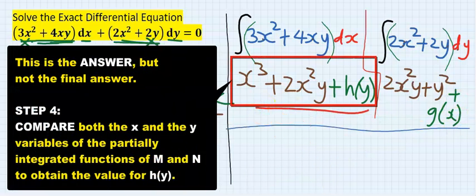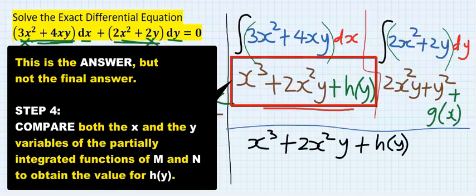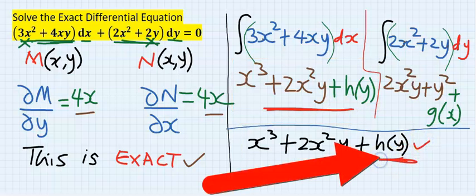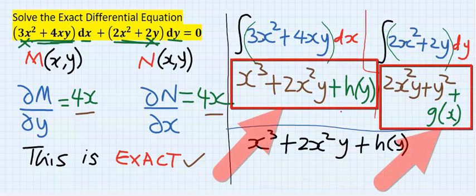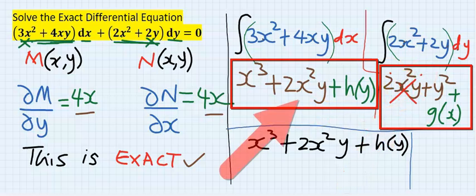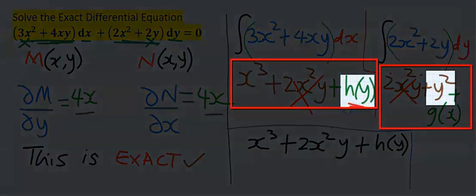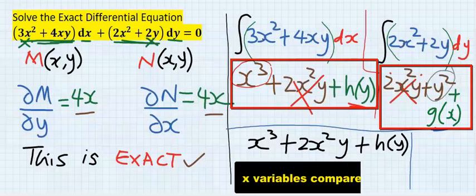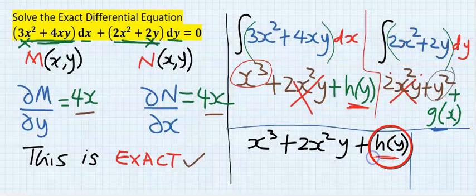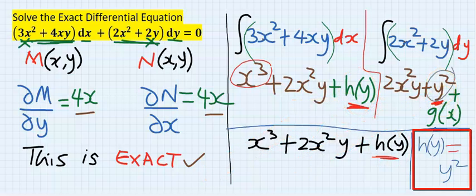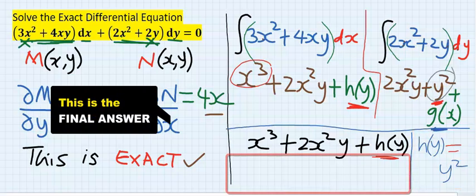Next, take the partially integrated function of M as your answer. This becomes our solution. Now replace h(y) by comparing the two integrated functions. We have 2x squared y from M's integral and 2x squared y from N's integral — these are equal. So g(x) equals x cubed. However, we are after h(y), so h(y) equals y squared. Our final answer is then determined.